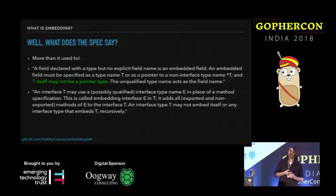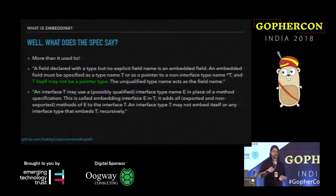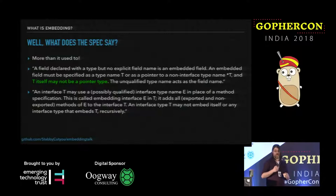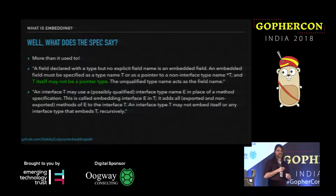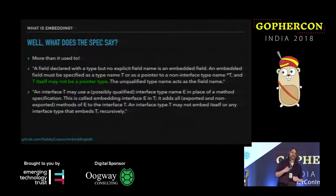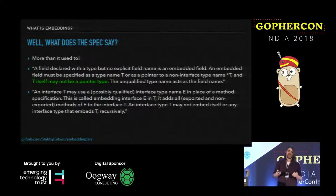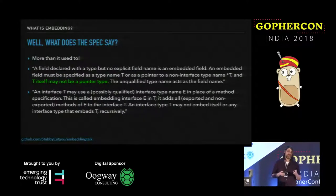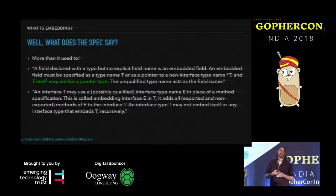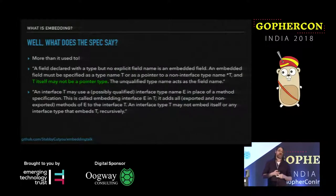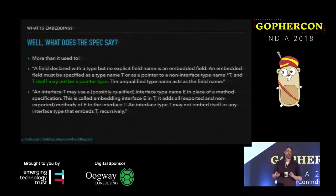For interfaces it's a little different. An interface T may use a possibly qualified interface type name E in place of a method specification — this is called embedding interface E in T. It adds all exported and non-exported methods of E to interface T. An interface type T may not embed itself or any other interface that embeds T recursively. Interestingly, you also can't do it with structs, but the spec doesn't tell you that — the compiler will stop you dead in your tracks, but the spec sort of leaves it as an open question.